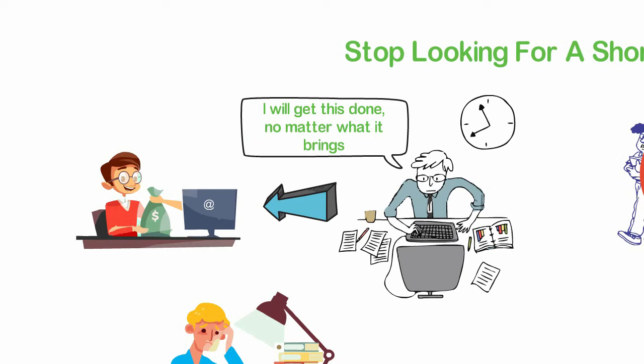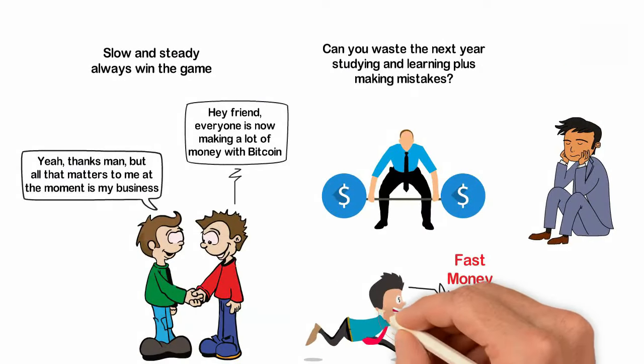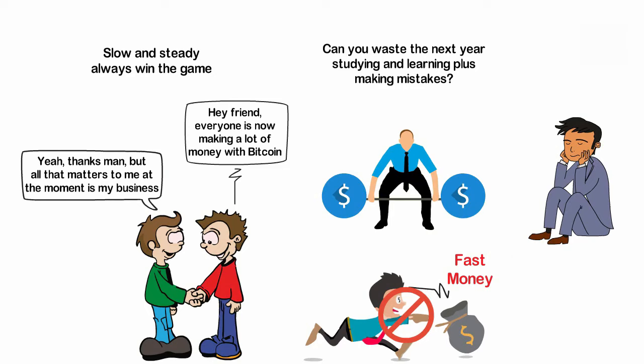Someone can tell you that some people make $50,000 every month on forex or crypto but what they don't tell you is that all of these people have invested 20 to 50,000 hours learning, making mistakes and failing. As you grow up, you'll do yourself a favor if you stop pursuing shortcuts because oftentimes, shortcuts simply lead you to failures.